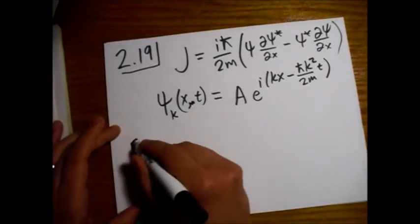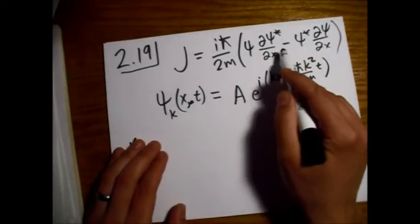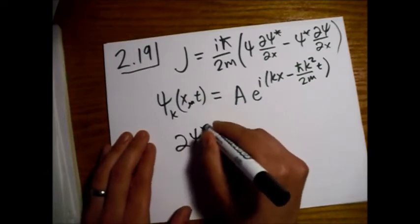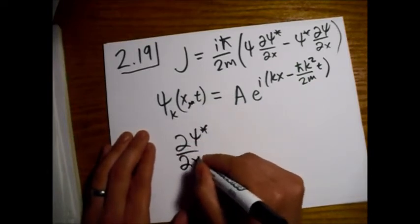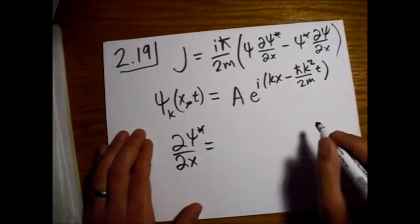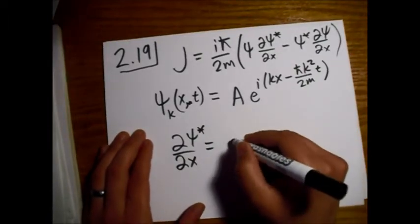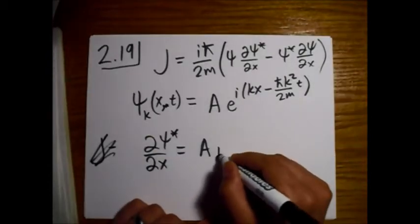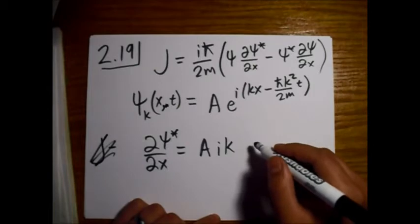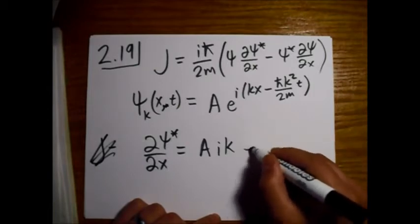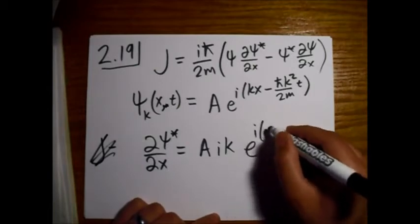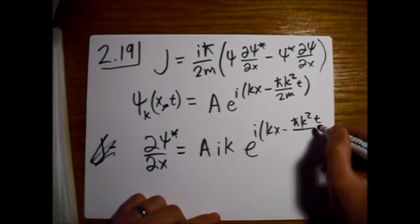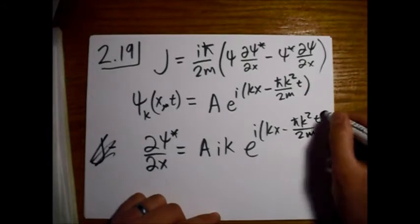Oh yeah, before we start on J, let's compute a couple of these derivatives. So we take the derivative of the conjugate. Okay, so we'll have this A out front. And so we're going to pull down an i, and then we get our exponential again.